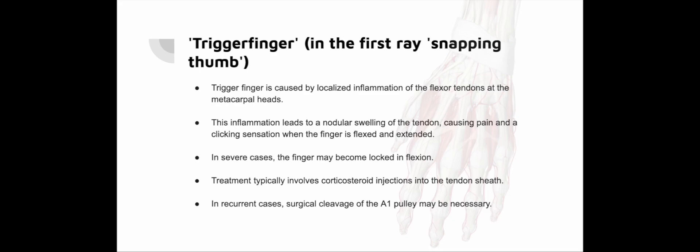Trigger finger: Trigger finger arises from localized tenosynovitis of the flexor tendons at the metacarpophalangeal joint level, characterized by a painful clicking sensation during finger flexion and extension due to an inflamed nodule passing through the tendon sheath. This condition commonly affects the middle or ring finger and sometimes the thumb. In diabetic patients, inflammation may involve multiple flexor tendons simultaneously. Treatment options include corticosteroid injections into the tendon sheath, providing long-lasting relief in many cases. For recurrent cases, surgical release of the tendon sheath — the A1 pulley — is an effective option.